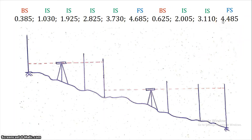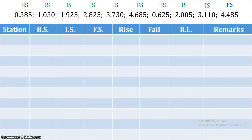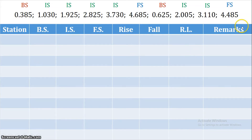I hope you have understood the basic idea. What we have to do in the rise and fall method: the field book columns are — station, back-site, intermediate-site, fore-site, rise, fall, reduced level, and remarks.